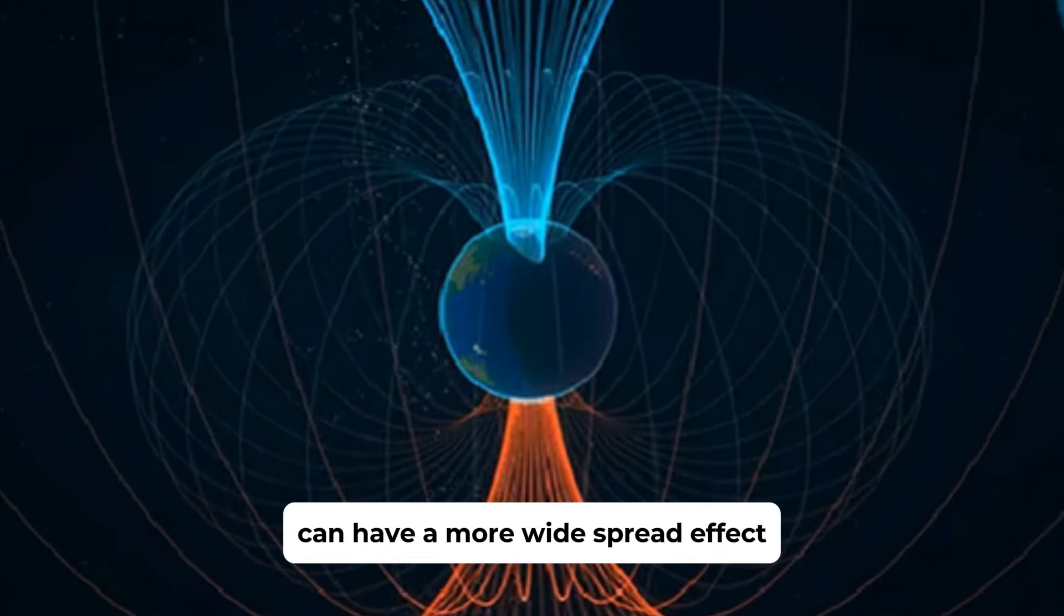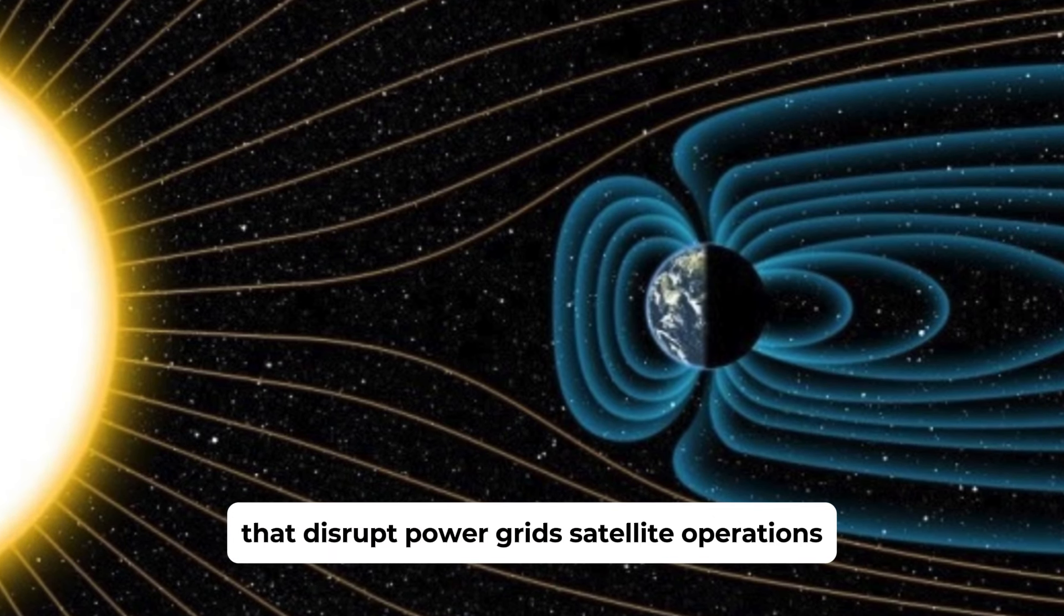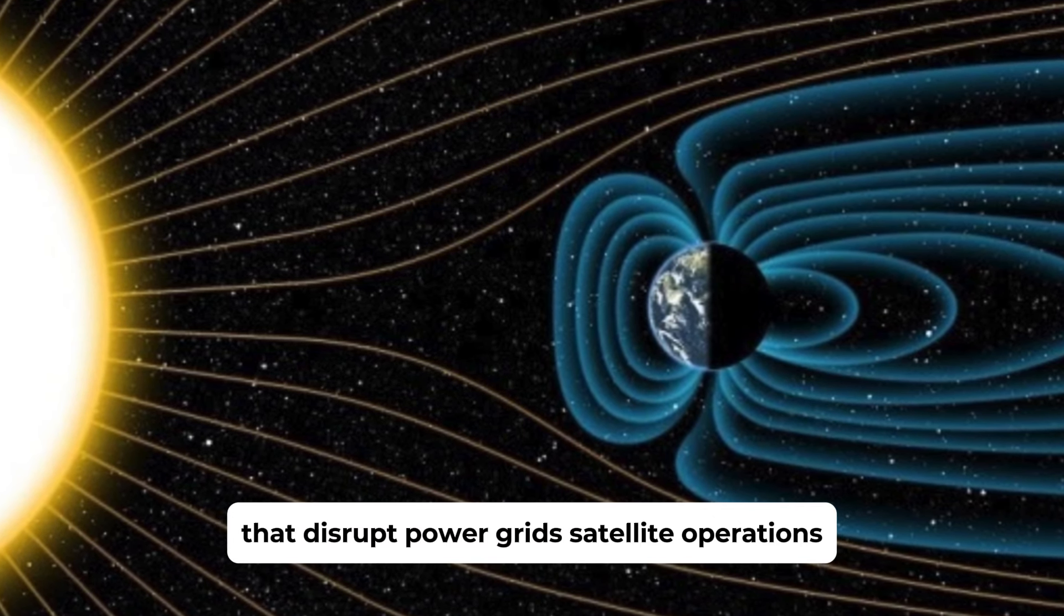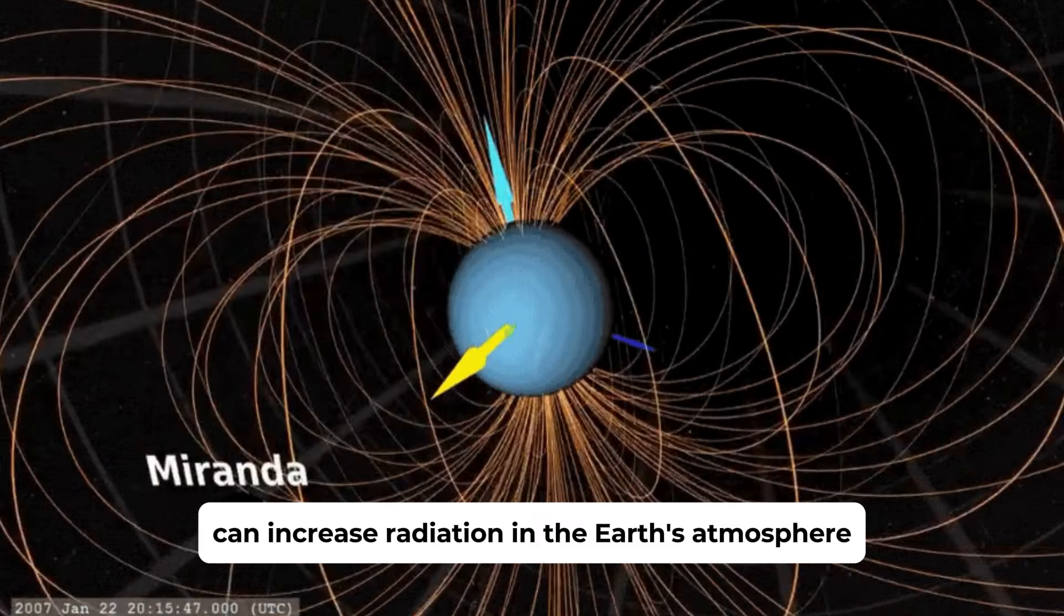CMEs, however, can have a more widespread effect that can cause geomagnetic storms that disrupt power grids, satellite operations, and those beautiful auroras can increase radiation in the Earth's atmosphere.